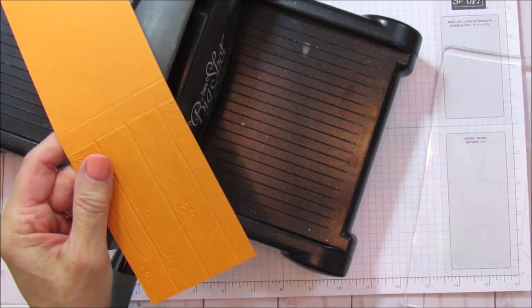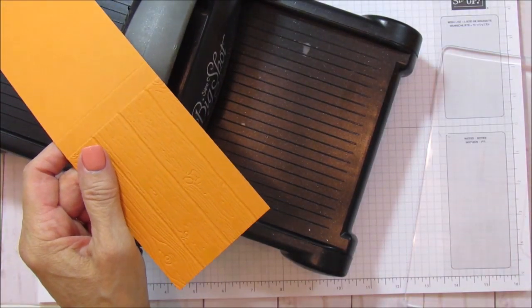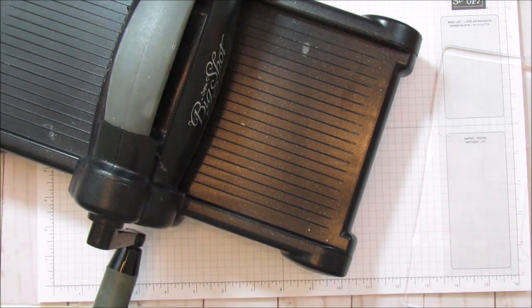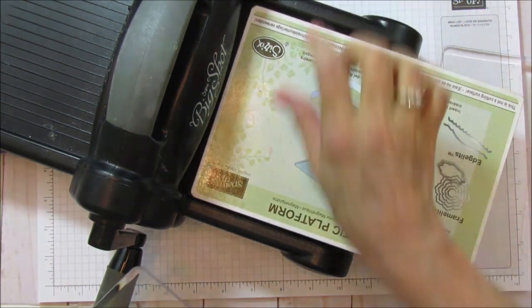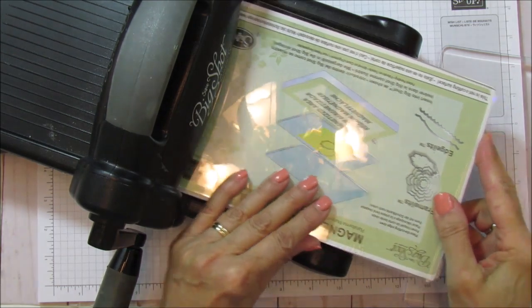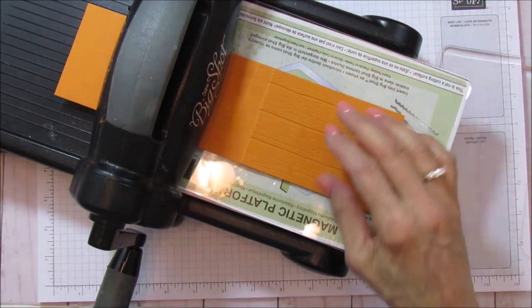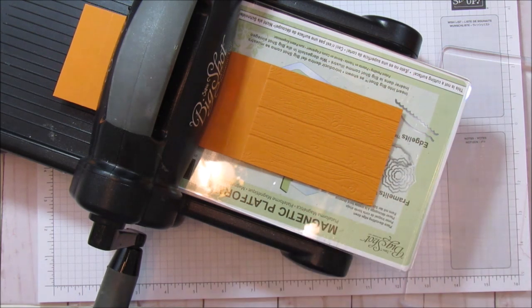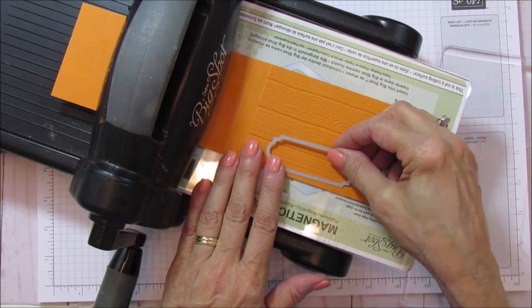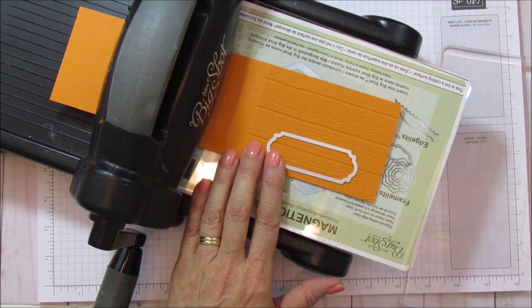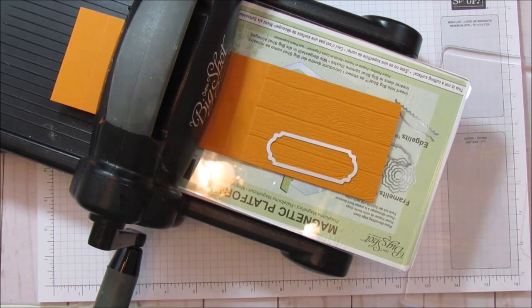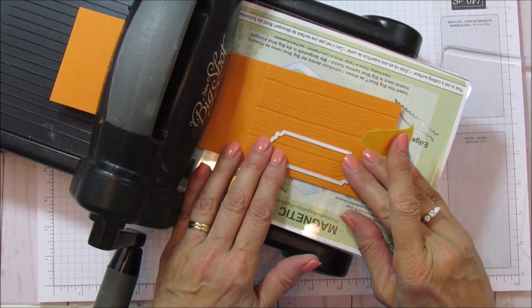Now I need to grab my magnetic platform and another base here, and then we are going to put the window in there. So you can put it on either side. I'm going to just put it on this side. I need a little bit of sticky note to hold this still, so I want to make sure it's pretty even.